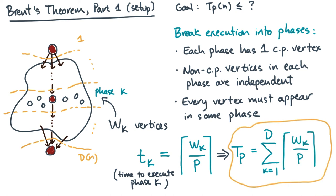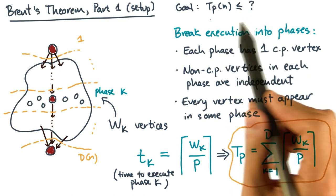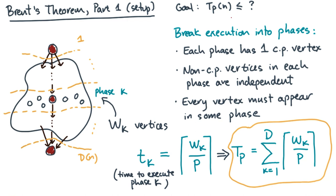I know what you're thinking - this seems really unhelpful. Are we any closer to achieving our goal? Mathematically, these ceilings are really ugly, and can we make them go away?